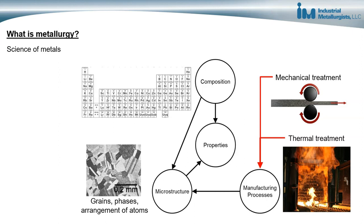Microstructure refers to things that are going on at a microscopic level inside of metals, which includes grains, phases, and arrangements of atoms and other structures. Manufacturing processes refer to the different mechanical and thermal treatments that we use to manipulate and modify metals to get certain properties.